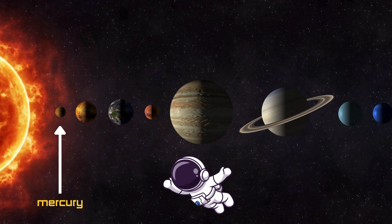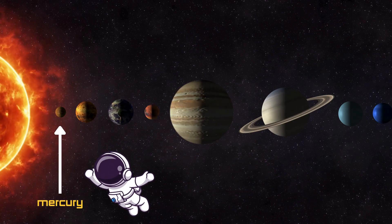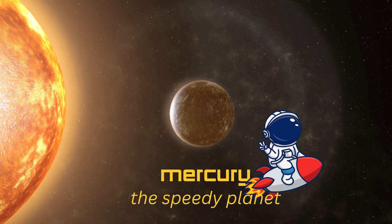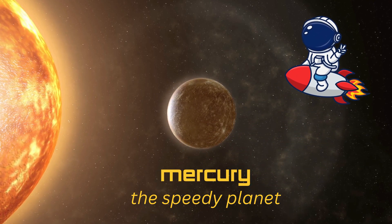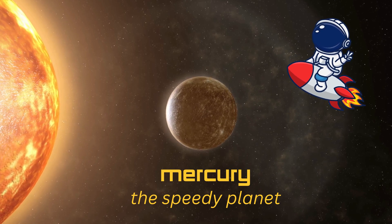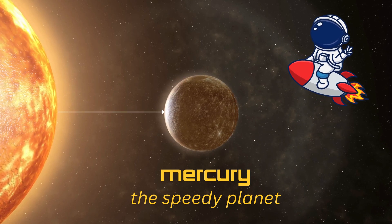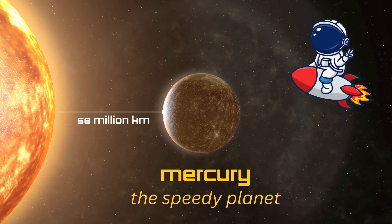Our first planet stop is Mercury, the fastest planet in the solar system. It zooms around the sun in just 88 days. Mercury is small, rocky, and super close to the sun, about 36 million miles, 58 million kilometers away.